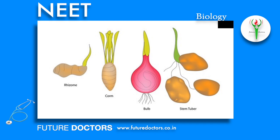Example: Zingiber officinale. Banana stems are non-green, slender stems that grow horizontally in the soil and ultimately come out to form new aerial shoots. Each sucker contains one or more nodes with scale leaves and axillary buds. Corm is a swollen condensed form of underground stem which grows in the vertical direction in the soil.